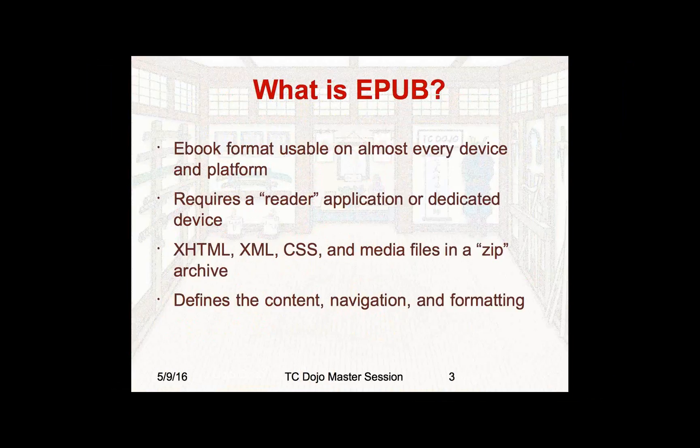What is EPUB? EPUB is a file format that's really the most popular e-book format out there. It's usable on basically every device and platform. It does require a reader application on that device — it may be a dedicated device where the reader application is built in, or it may be a device that you have to install a reader on. The EPUB file is a collection of XHTML, XML, CSS, and media files all wrapped up in a zip archive. To really learn about EPUB, grab an EPUB file, change the file extension from EPUB to zip, and open it up in your favorite archive tool — you'll see the files inside, and most of them will look very familiar.